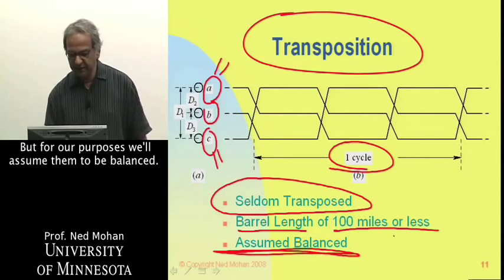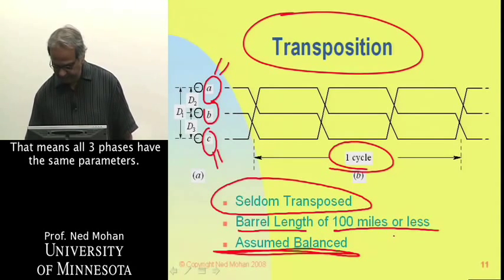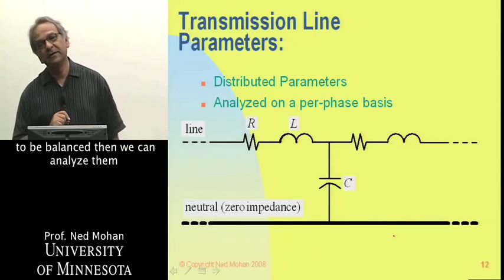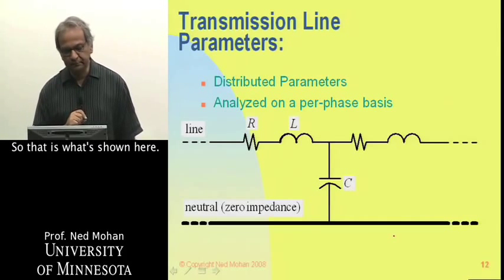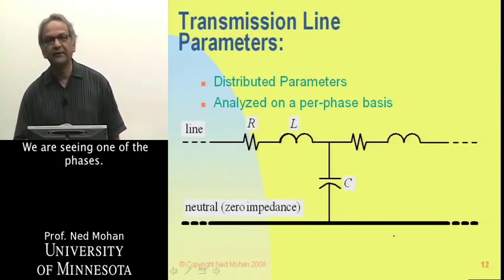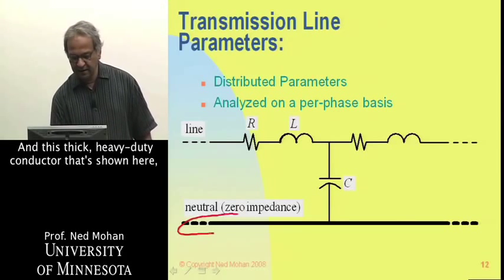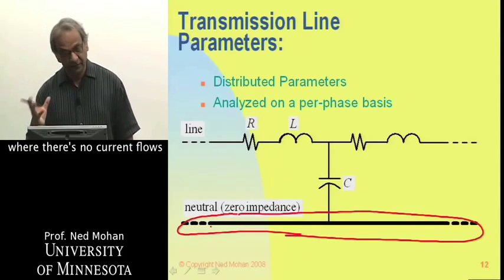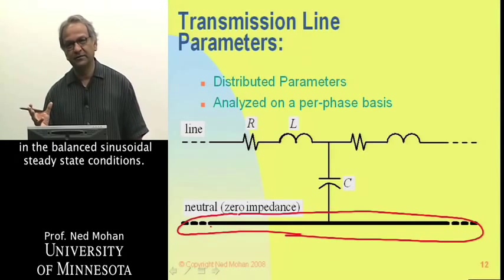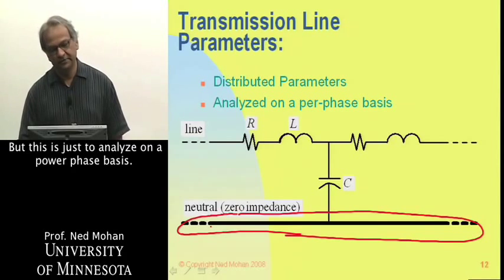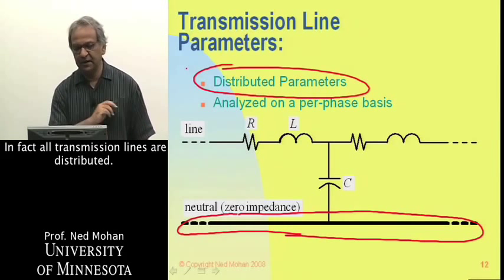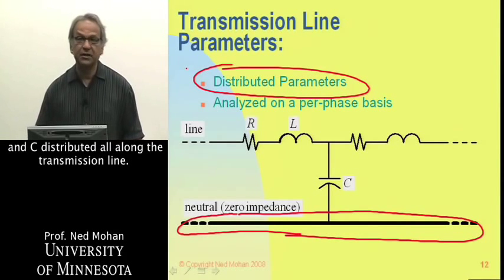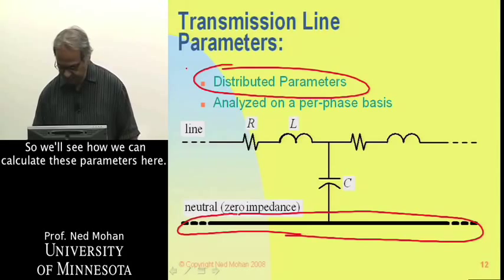For our purposes, we'll assume the lines to be balanced — meaning all three phases have the same parameters. If we can assume balance, we can analyze them on a per-phase basis. The neutral conductor shown carries no current under balanced sinusoidal steady-state conditions. In effect, all transmission lines are distributed, so you have R, L, and C distributed all along the transmission line, and we will see how to calculate these parameters.